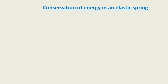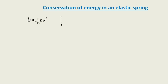Hi everyone, today in this lesson we are going to deal with the conservation of energy in an elastic spring. In the last lesson we already discussed the energy stored in the spring: U is equal to half into k into x square. This is the formula for energy stored in an elastic spring, also called elastic potential energy.